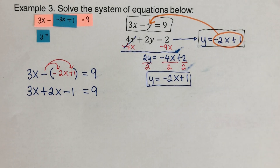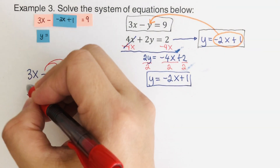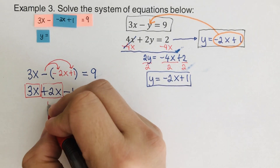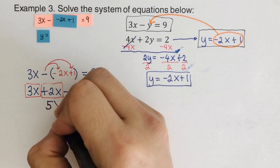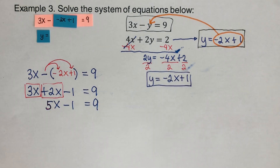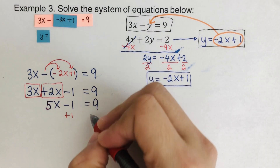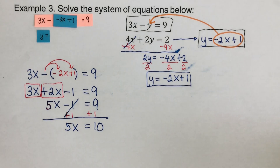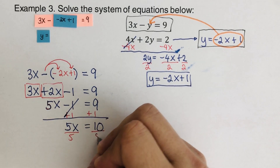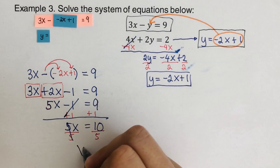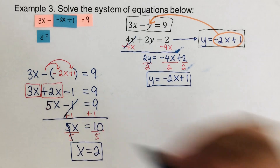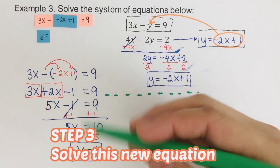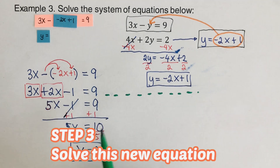From here we combine like terms. We have 3x plus 2x — both have x, so this becomes 5x minus 1 equals 9. We want x by itself, so we add 1 to both sides, giving 5x equals 10. Then we divide 5 from both sides, and we get x is equal to 2. So this is the value of x, and now we are ready to determine the value of y. This is the third step — we solved the equation and found the variable.